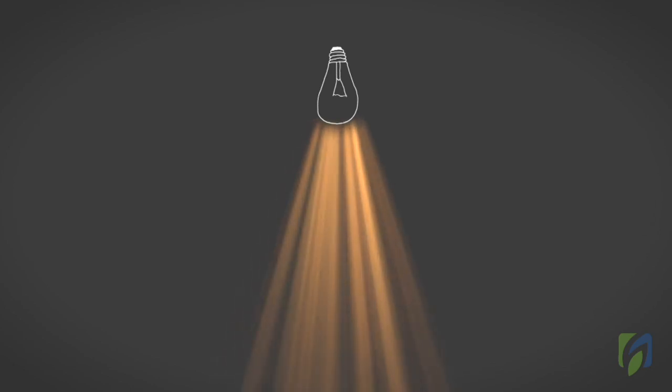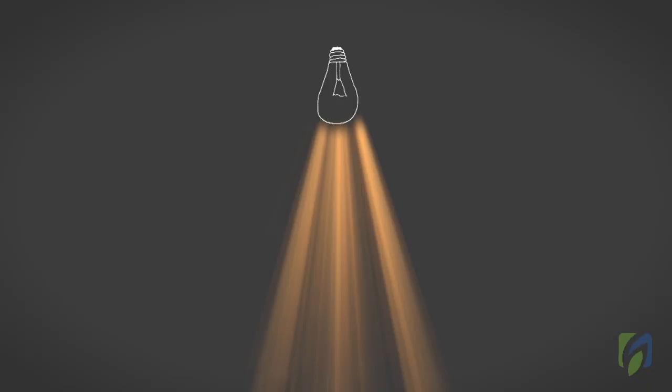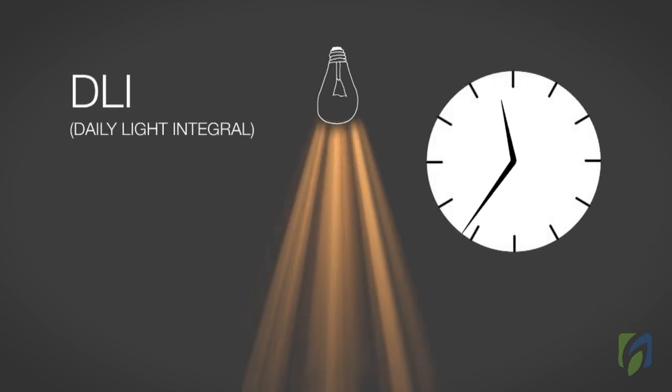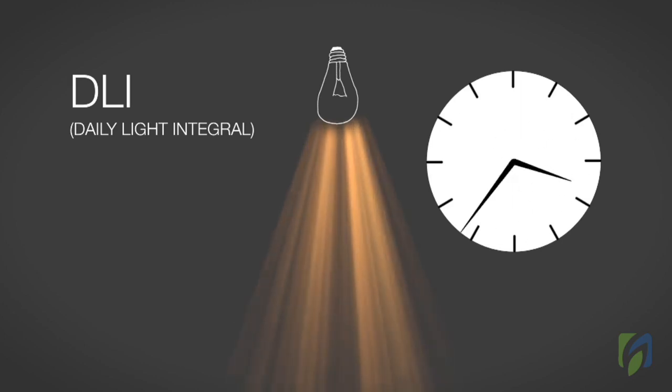Light quality can be measured in two ways. One, light intensity. This is the instantaneous amount of light received by the plants. Two, DLI, or daily light integral, is the cumulative amount of light delivered to the plants each day.